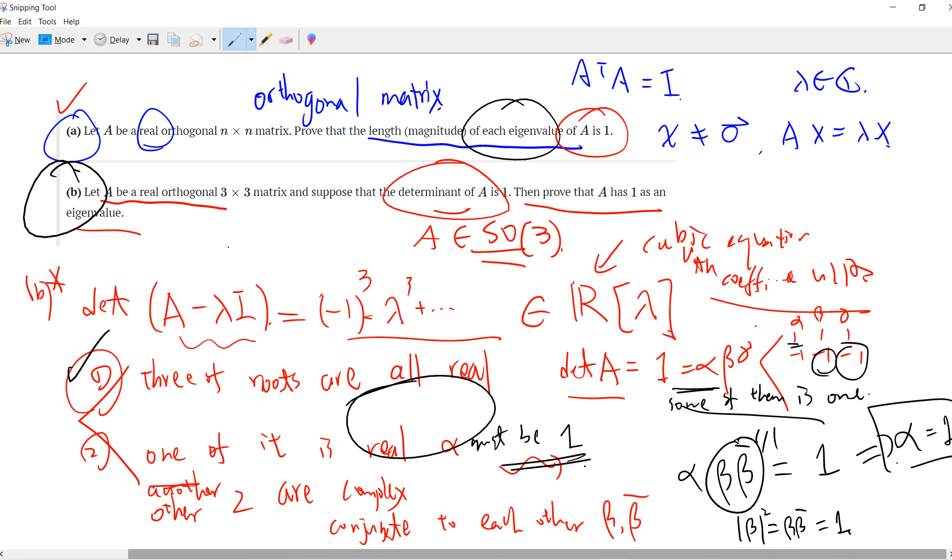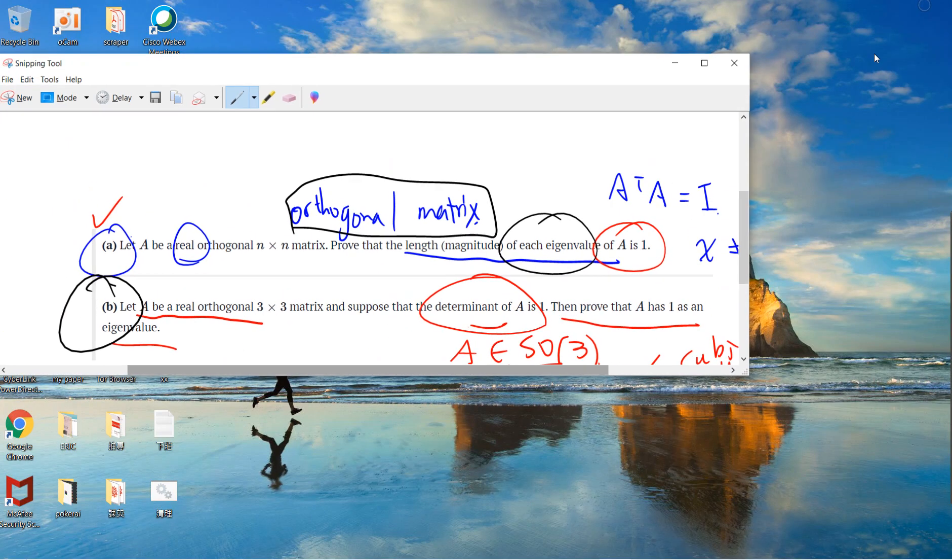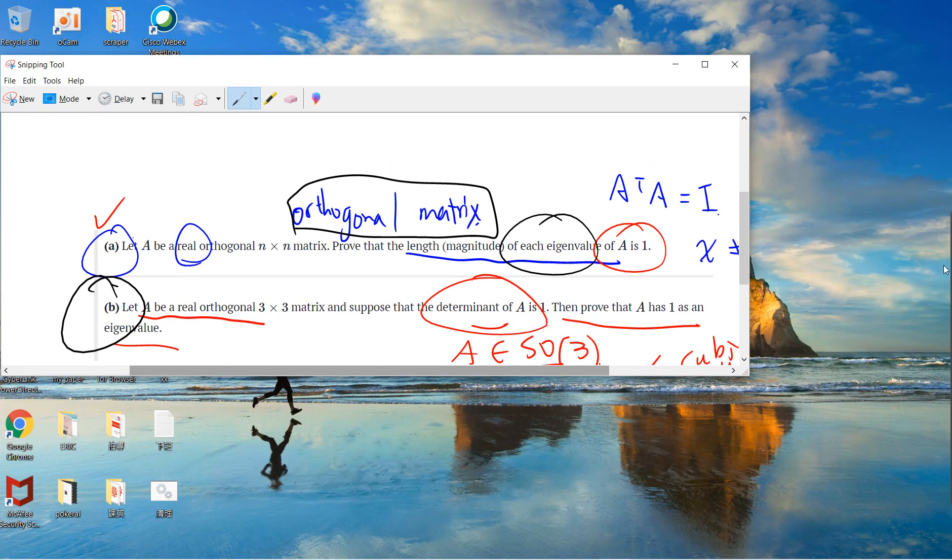And that's it. These are the two basic eigenvalue properties of the orthogonal matrix and the special orthogonal matrix. I will see you guys in the next linear algebra videos. Be sure to subscribe to my channel. Thanks.